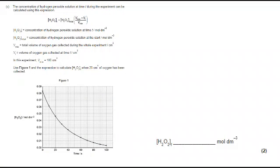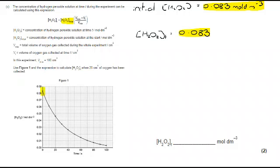Okay we move on to part C. We've got here concentration of hydrogen peroxide solution at time t during the experiment can be calculated using this expression. This isn't an expression that you will likely be familiar with but they've given it you and they've told you exactly what all of the things mean. Use figure one and the expression to calculate H2O2 t when 20 centimeter cubed of oxygen has been collected. So we know that the initial H2O2 is 0.083. We're reading that directly from the graph.